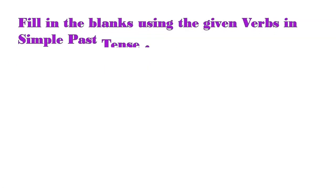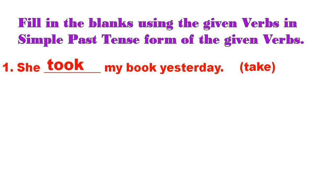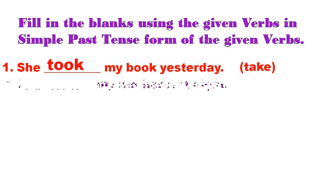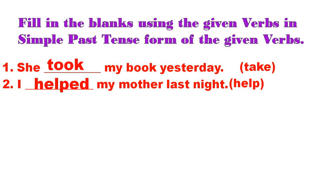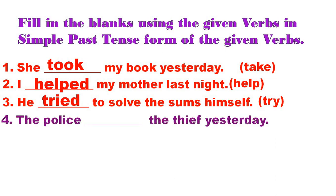Let's learn more through a few examples. We have to fill in the blanks using the given verbs in simple past tense form. First: 'She ___ my book yesterday.' (take) → took. She took my book yesterday. Next: 'I ___ my mother last night.' (help) → helped. Next: 'He ___ to solve the sums himself.' (try) → tried. Next: 'The police ___ the thief yesterday.' (catch) → caught. Next: 'My sister ___ beside me to talk.' (sit) → sat. Next: 'She ___ down and ___ her leg.' (fall, break) → fell, broke. 'The sun ___ brightly yesterday.' (shine) → shone.